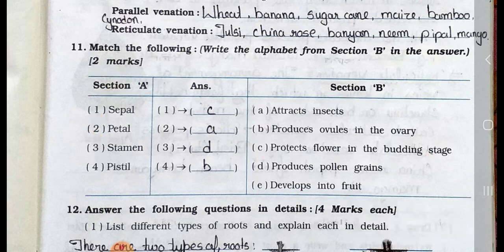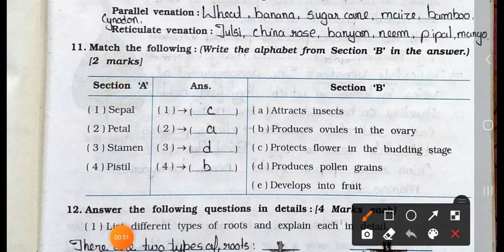Now see, the sepal matches with C, protects flower in the budding stage. Number 2, petal matches with A, attracts insects. Number 3, stamen matches with D, produces pollen grains. Number 4, pistil matches with B, produces ovules in the ovary.